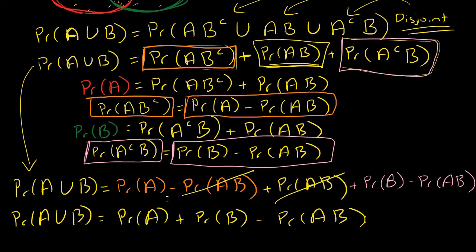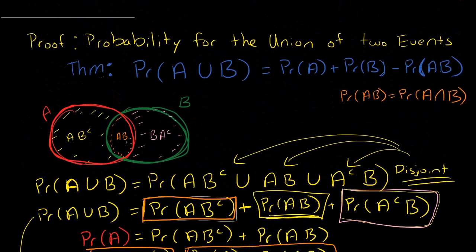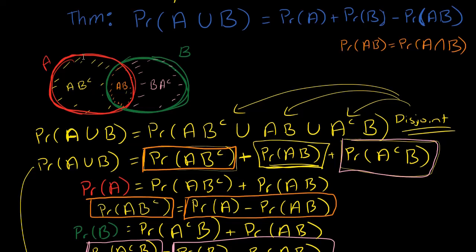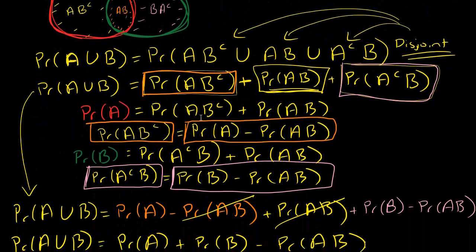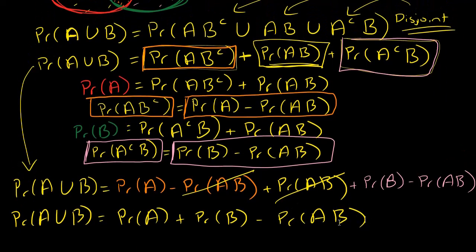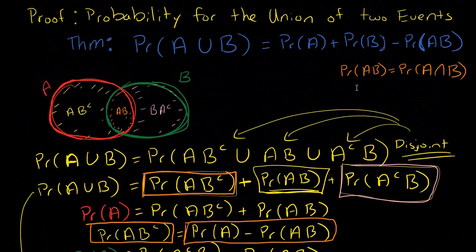That's a lot of work, but we got there. That's our proof — that is what the theorem states, and this is how you get there. Basically, once you've broken it down into disjoint events, you can break up the probability into a sum, solve for some of these pieces, and use algebra to arrive at the conclusion of the theorem.